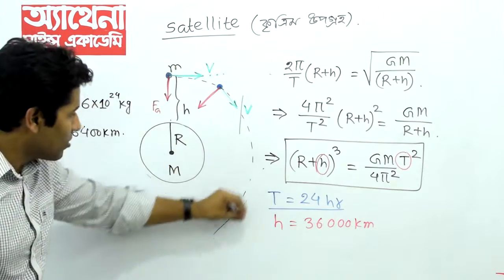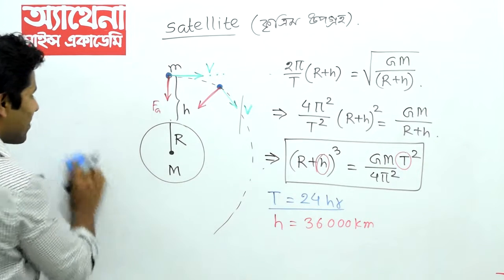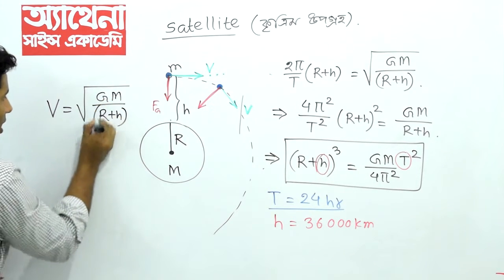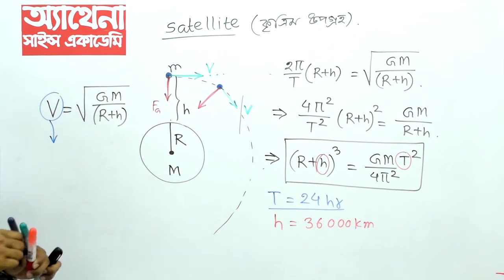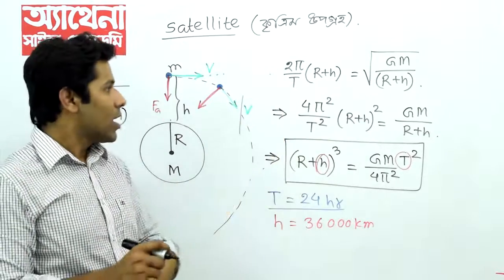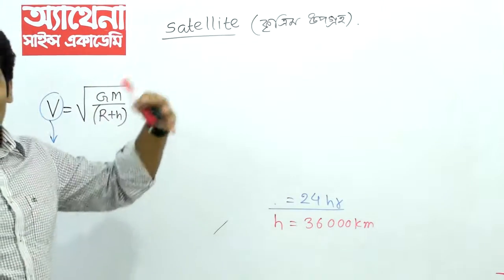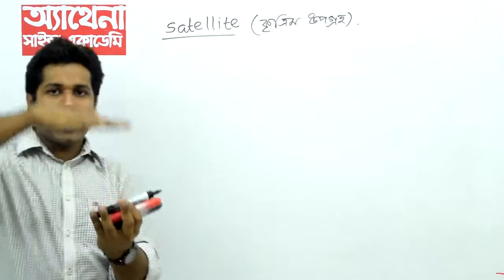પૃથ્વી ચારે કૂટ, આ કોણ, આ ક્ષૂ ક્ષૂ, 6000 kilometers. 2 kotha. NASA નામ, gelo beshi koro, naacha charao — orbital velocity calculate karo.